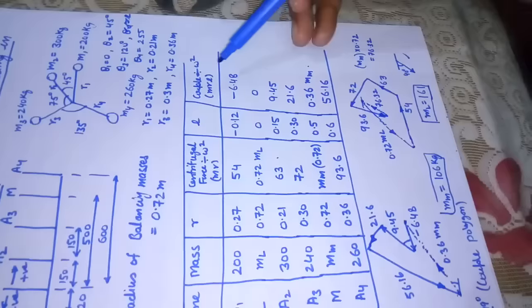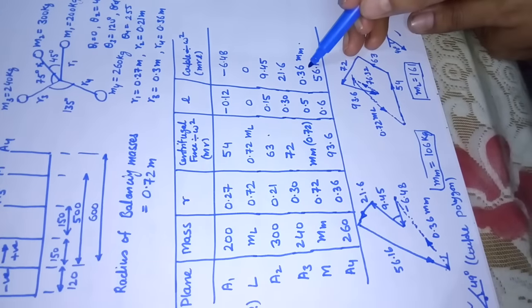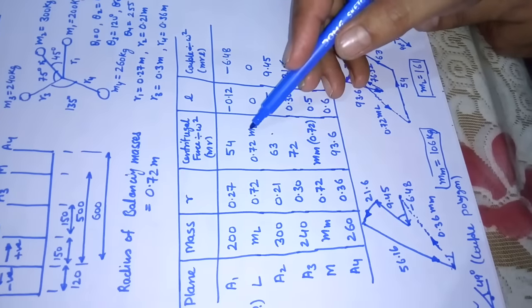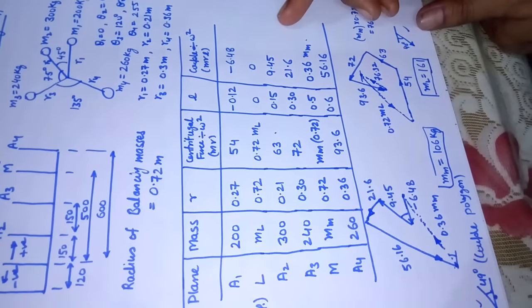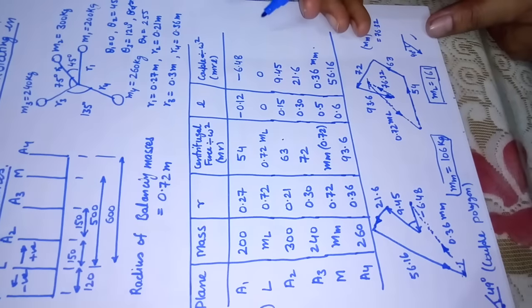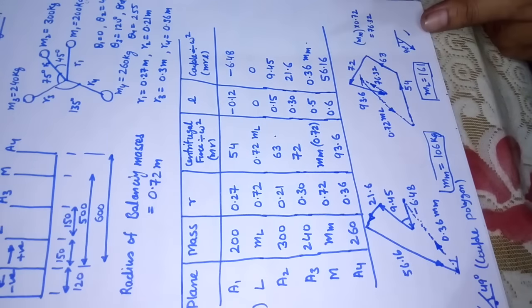If you will see the couple column, we have one unknown 0.36 mm. In the force column we have two unknowns, so it is recommended to start the solution from the couple's polygon. We will make the couple polygon first, and after making the couple polygon we will make the force polygon.